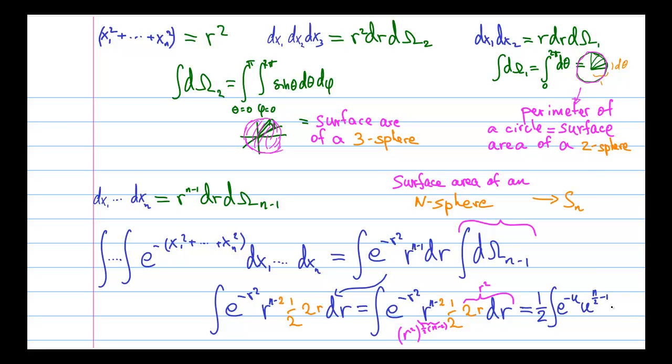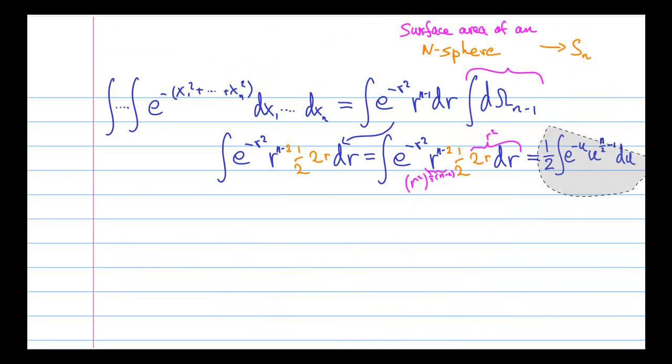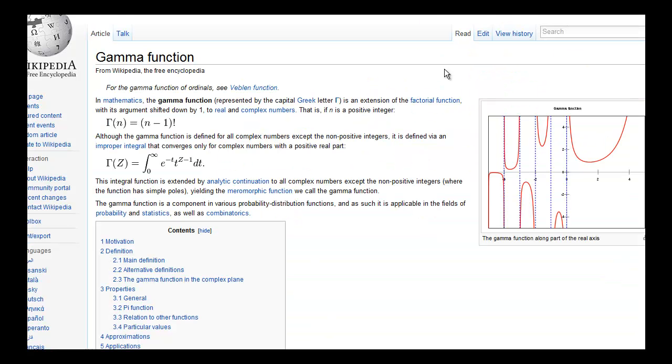So now we actually have to cheat a little bit and look this integral up on the internet. And what we find is that this integral gives us something called the gamma function. Now the gamma function is very famous and very cool and has a very long Wikipedia page.